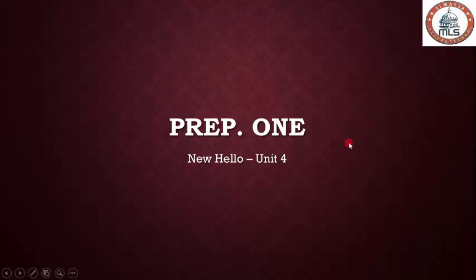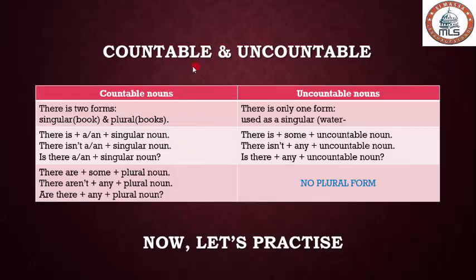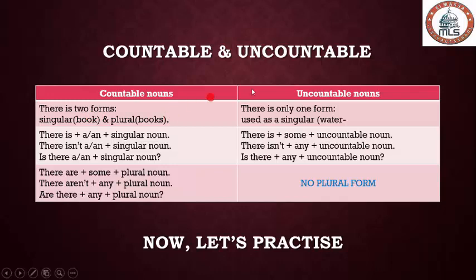Hello everyone, in this video we'll revise our grammar in Unit 4. Let's start studying together: countable and uncountable nouns. Countable nouns have two forms — singular and plural. Singular noun like 'book,' and plural noun like 'books,' 'tree'/'trees,' 'apple'/'apples,' 'child'/'children,' and so on.